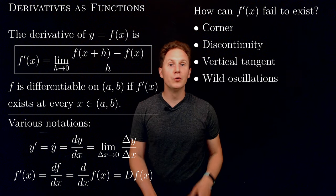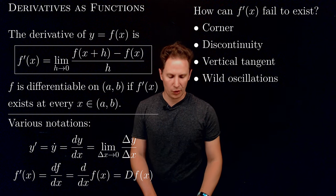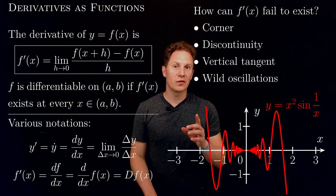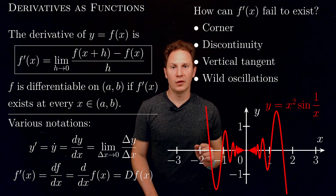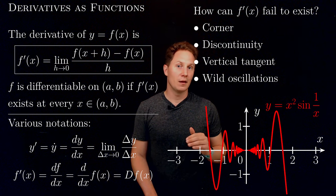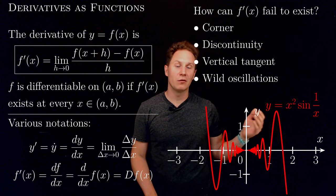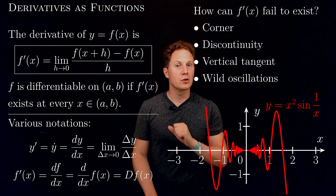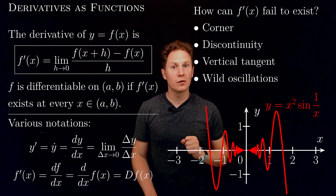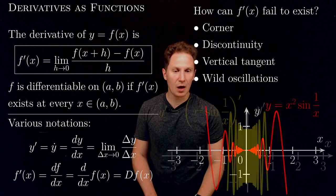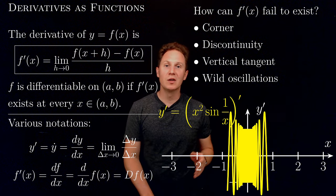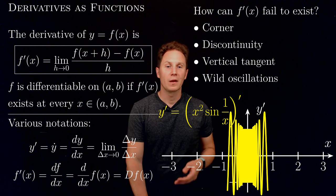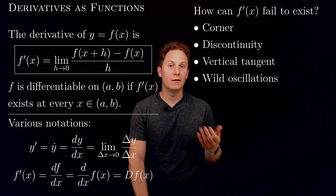Finally, f could widely oscillate around the point x. For example, x²·sin(1/x) with its continuous extension assigning the value 0 at x = 0 gives a function that is continuous everywhere — you can verify continuity at 0 by the squeeze theorem. When we compute its derivative function using the definition, we get a function whose graph widely oscillates around x = 0 to the point where, as x approaches 0, the limit does not exist.